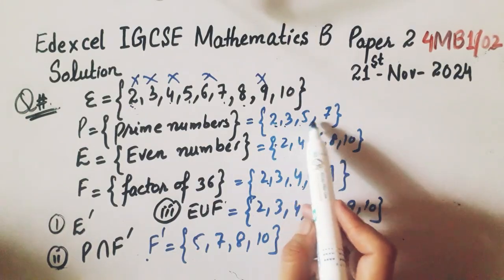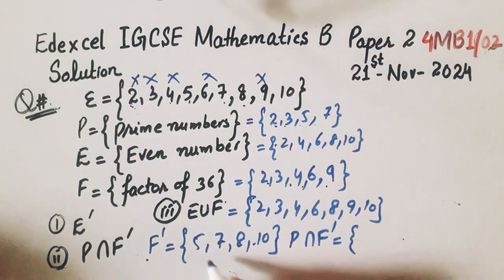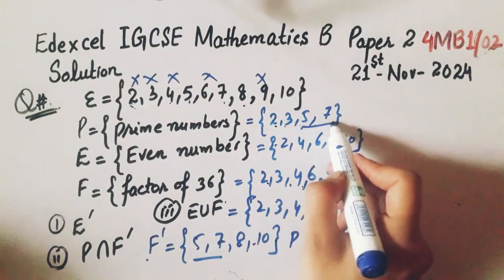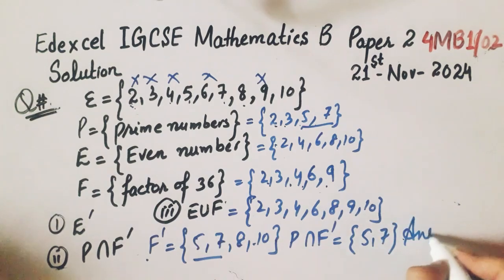Now take the F complement intersection with P. So P is 2, 3, 5, 7 and F complement is 5, 7, 8, 10. So 5 and 7 are common. P intersection F complement equals 5 and 7. So this will be the answer.